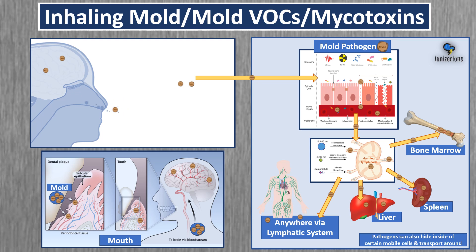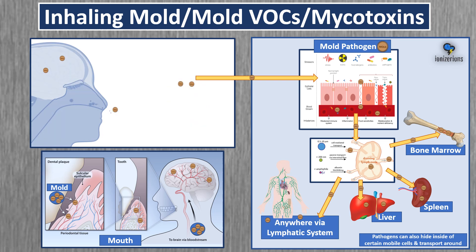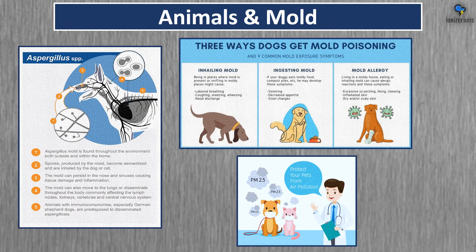When you inhale mold VOCs and mycotoxins they can go straight to your brain via the nasal passage or saliva. They can be inhaled into the lungs, cross open cell gap junctions into the bloodstream and lymph nodes, and be delivered anywhere in your body to cause inflammation. Your pets are also at significant risk of inhaling and ingesting mold, so monitor them for symptoms — there might be mold on the floor or in their food.